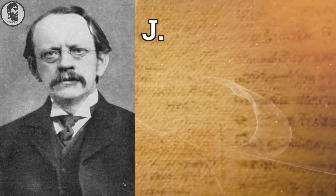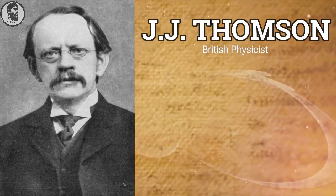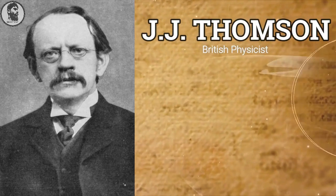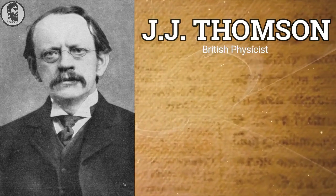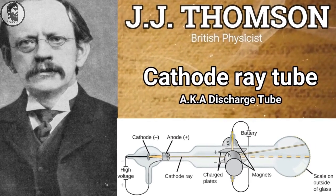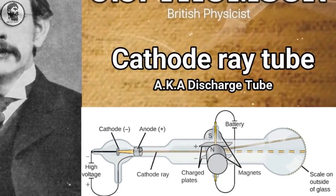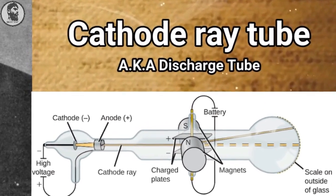In 1897, J.J. Thomson, a British physicist, along with his team conducted several experiments using a cathode ray tube, as you can see over here. This cathode ray tube is also known as discharge tube.